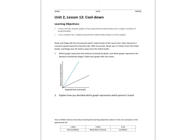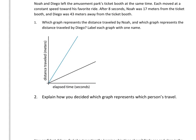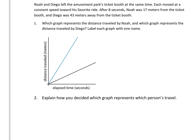So question 1 says, which graph represents the distance traveled by Noah, and which graph represents the distance traveled by Diego? Label each with one name.